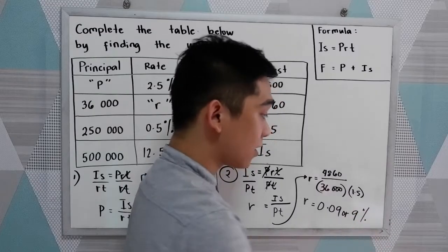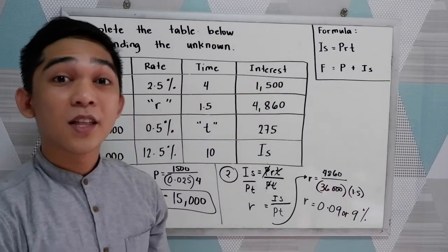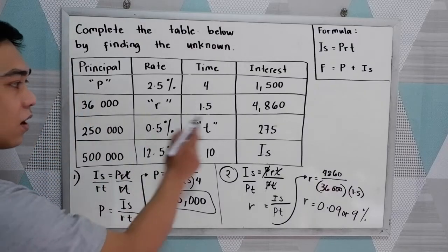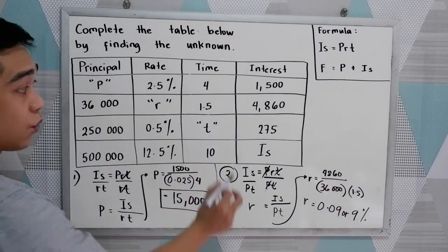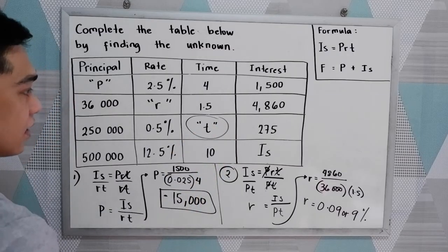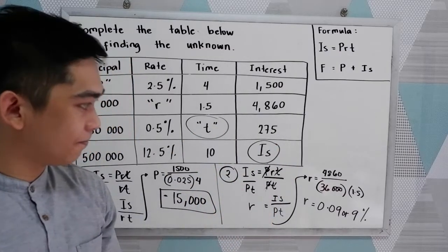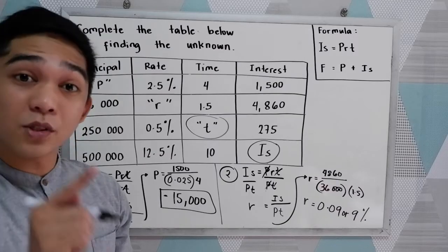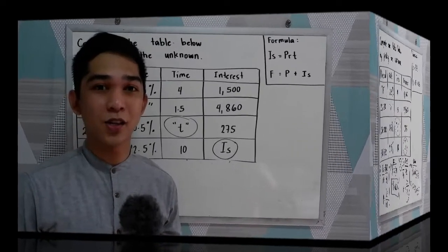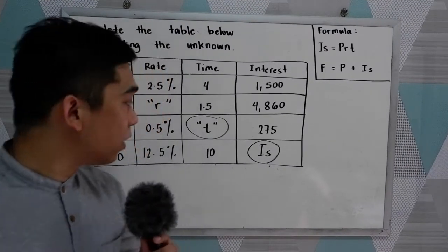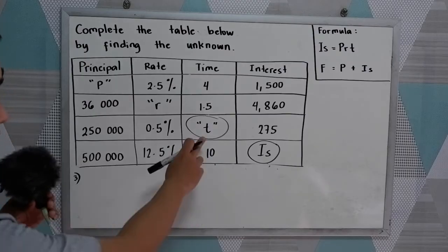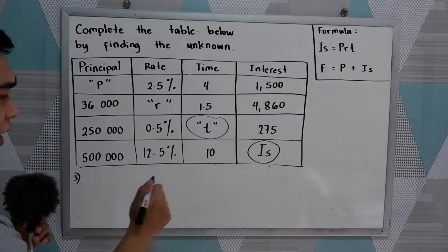Your turn — answer the third row and the fourth row. We're going to find the time and the simple interest. Pause the video and start answering. Let's check your answers. In our third row, the unknown is time, so let us derive the formula again.